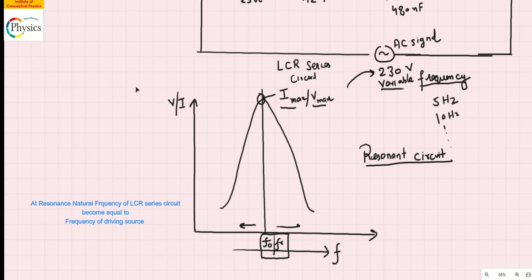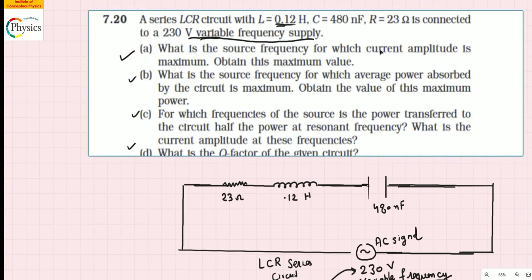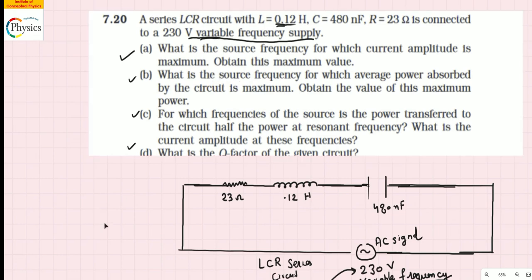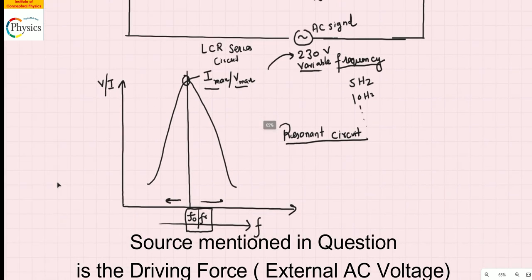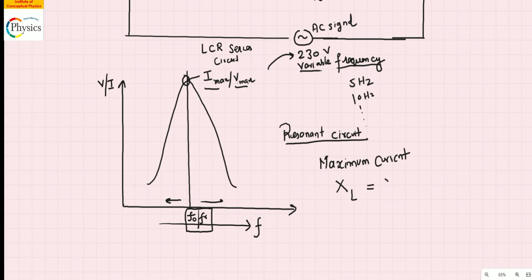The frequency at which the signal becomes clearest and you get the highest value of voltage or current is called the resonance frequency. Going back to the question: the maximum current amplitude occurs at the resonant frequency. The condition for maximum current is that the inductive reactance offered by the inductor becomes equal to the capacitive reactance. XL is a type of resistance that an inductor offers to the AC signal — inductive reactance.